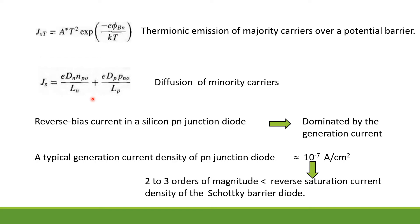The reverse bias current in a silicon P-N junction diode is dominated by the generation current. A typical generation current density of a P-N junction diode is approximately of the order of 10⁻⁷ A/cm². This value is 2 to 3 orders of magnitude less than that of the reverse saturation current density of a Schottky barrier diode.